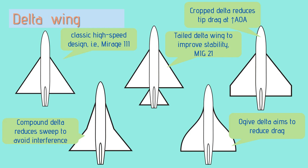Mostly ogive delta wing aims to reduce the drag at high speed, mostly found in high-speed passenger aircraft like Concorde. All delta wings are swept wings, but not all swept wings are delta wings. Please make a note of that.